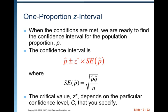When the conditions are met, we are ready to find the confidence interval for the proportion p. The confidence interval is p-hat ± z* × SE(p-hat), where SE(p-hat) = square root of p-hat × q-hat over n. The critical value z* depends on the particular confidence level C that you specify.